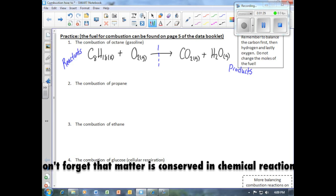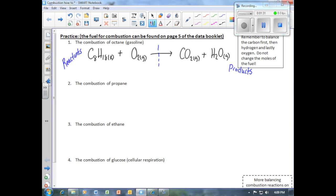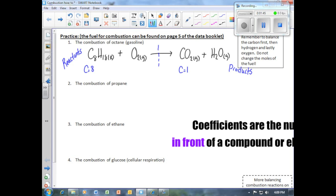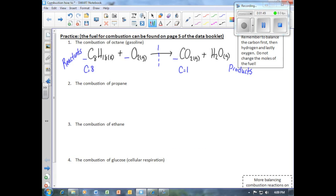We now start with balancing the number of carbon atoms. On the reactant side, we have eight carbon atoms. On the product side, however, we only have one carbon atom. In order to make this equation balance, we have to use coefficients. Coefficients are the large numbers that you normally see in front of any chemical formula or element.